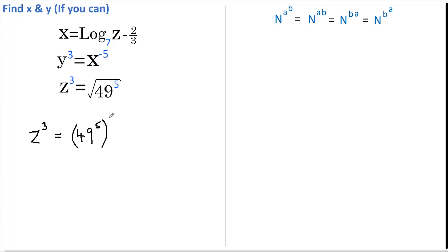I'm going to write the square root as to the power of a half. Now, in accordance with this rule that allows us to swap the powers, I'm going to rewrite this as 49 to the power of a half raised to the power of 5.